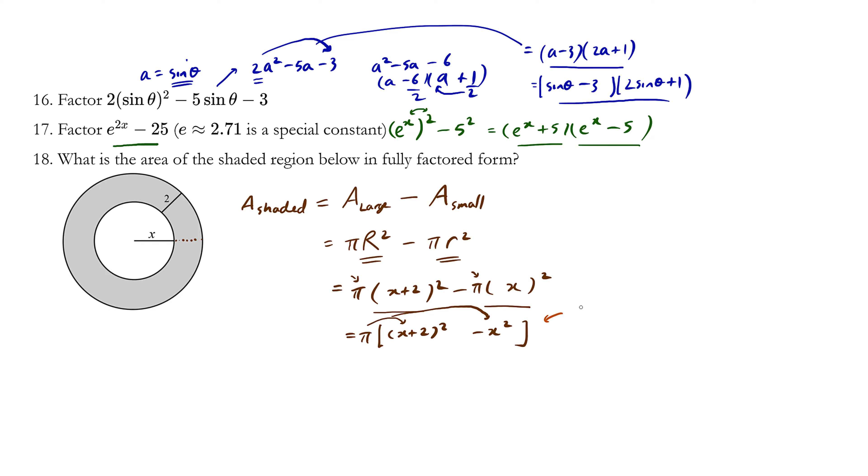So when you look at the inside part of the brackets here, try to recognize this is actually a² minus x², which can be factored using difference of squares. And this 'a' value happens to be x + 2.